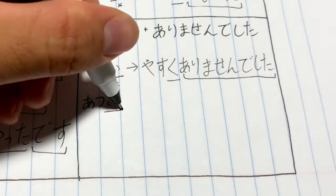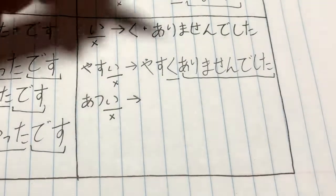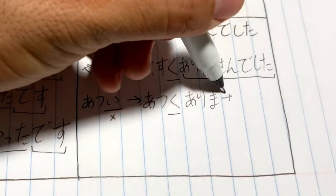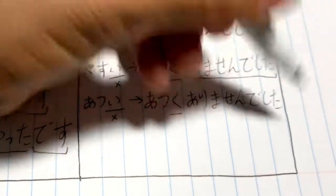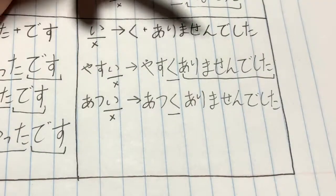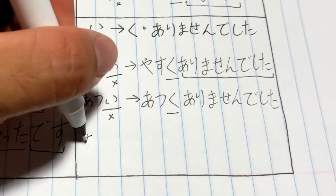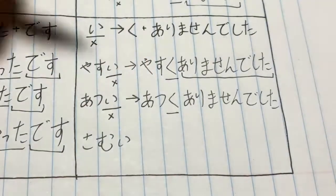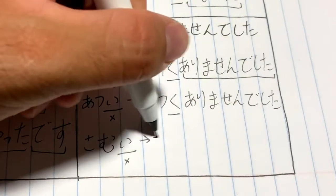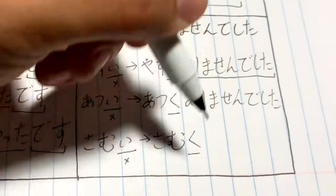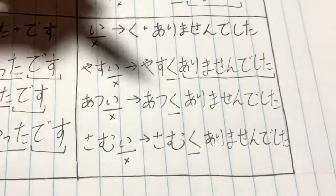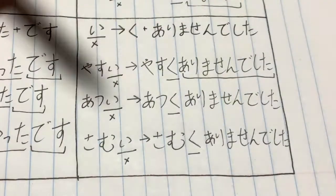The next one we have is 暑い (atsui). We have the 'i' here which we replace with く (ku), and then we add ありませんでした (arimasen deshita). So 暑い becomes 暑くありませんでした (atsuku arimasen deshita), meaning 'it wasn't hot.' And again, the last word is 寒い (samui). We see the 'i,' which is the adjective. We replace that with く (ku) and then add ありませんでした (arimasen deshita). So 寒い becomes 寒くありませんでした (samuku arimasen deshita), meaning 'it wasn't cold.'